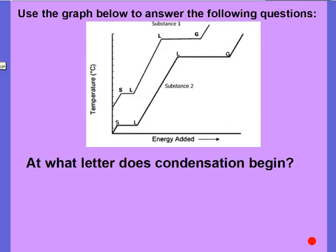And finally, at what point does condensation begin? Restart when you've figured out your letter. So, condensation was gas to liquid. Here's my gas. There's my liquid. And so, point G is where condensation begins.